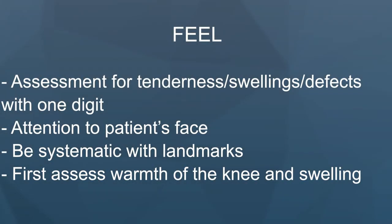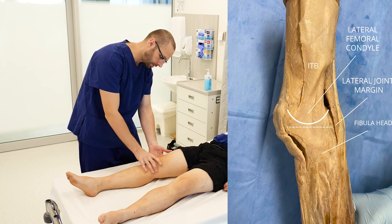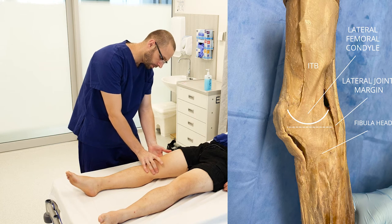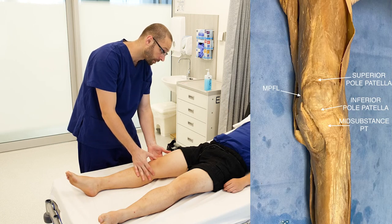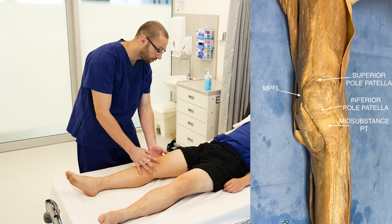Now to feel. While supine, palpate systematically with one finger for any signs of tenderness or swellings. Assess for clinical warmth. Palpate the fibular head for tenderness at the LCL insertion site, the lateral joint margin, the lateral femoral condyle for the LCL origin, and the iliotibial band. Furthermore, palpate the superior pole of the patella and quadriceps tendon, the inferior pole of the patella and the patellar tendon, and the medial patella including the medial patellofemoral ligament, which may be ruptured in a patellofemoral joint dislocation.